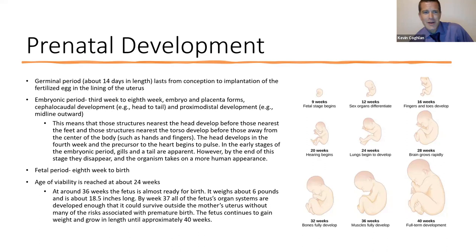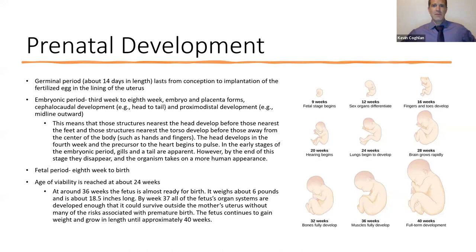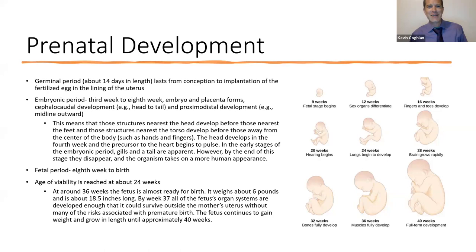Quoting the book: cephalocaudal means that structures nearest the head develop before those nearest the feet, and those structures near your torso develop away from the center of your body toward your hands and fingers. The head develops in the fourth week, and the precursor to the heart begins to pulse in the fourth week during the early stages of the embryonic period. We also have gills and a tail at this stage, but by the end of this period those disappear and the organism takes on a more human appearance.